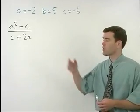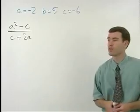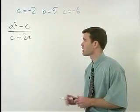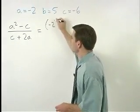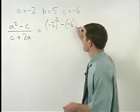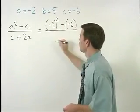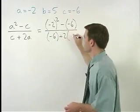To evaluate this problem, the first thing we want to do is plug in the appropriate values for A and C. When we do that, we get negative 2 squared minus a negative 6 all over negative 6 plus 2 times negative 2.